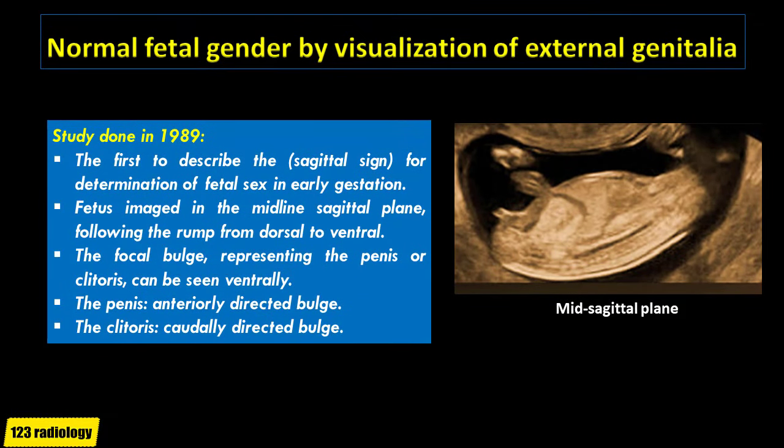Determination of normal fetal gender by visualization of external genitalia. Intrauterine sex determination is performed by ultrasound evaluation of the external genitalia from the second trimester onwards.